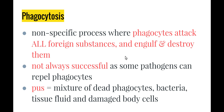The second process is phagocytosis — another nonspecific process where phagocytes attack all foreign substances and engulf and destroy them. Because it's nonspecific, it doesn't matter what pathogen is trying to get in; phagocytes will attack them. However, phagocytosis is not always successful, as some pathogens can repel phagocytes, requiring the third line of defense. Pus from infected areas is actually a mixture of dead phagocytes, bacteria they've ingested, and surrounding tissue fluid — which is why you should never touch pus and then touch another person or body part.